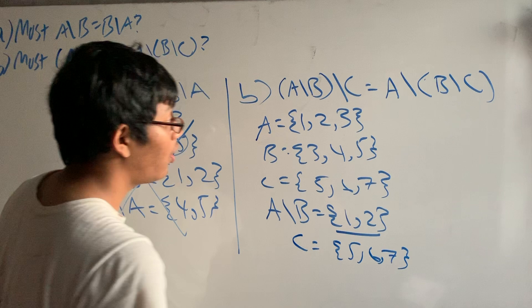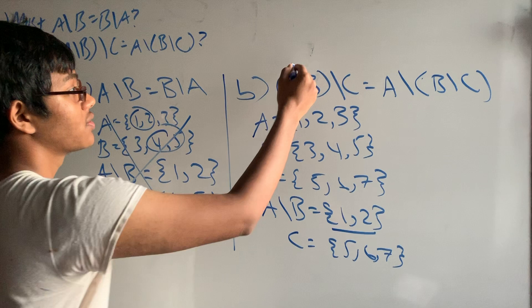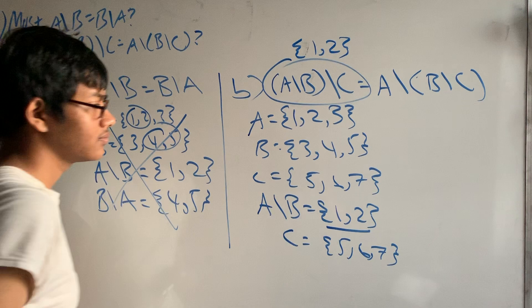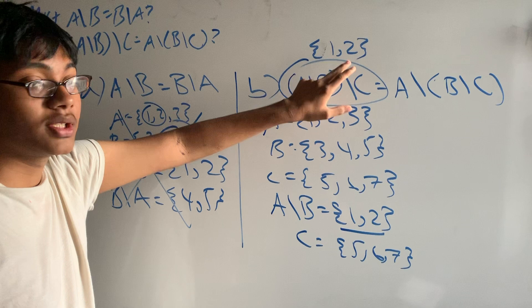So all the elements in the difference of sets A and B that are not in C is going to be 1 and 2. So this whole left side is going to collapse to {1, 2}. Now if this statement is true, the right side should be the exact same thing, {1, 2}. Let's see if it is.